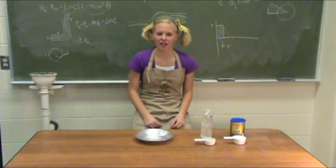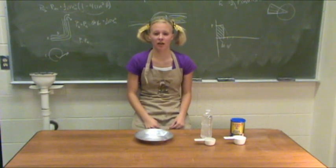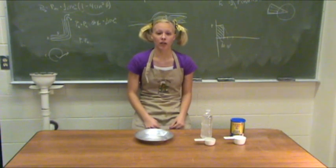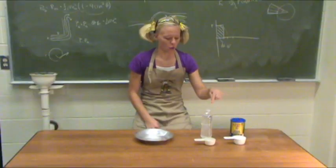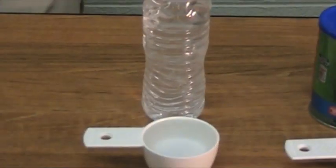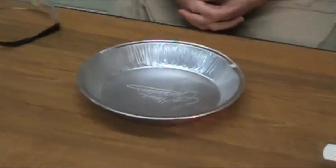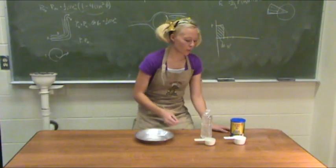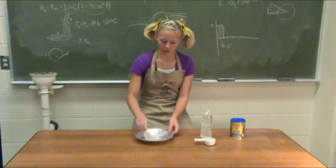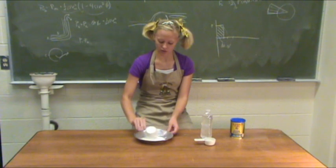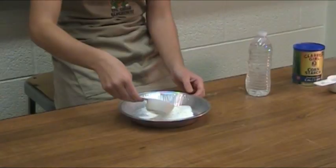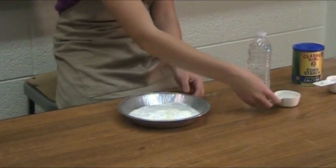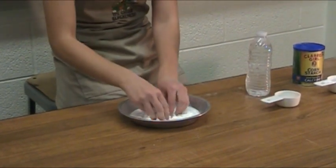Hello, future fluid dynamicists. Today I'm going to teach you how to make your own non-Newtonian fluid at home. What you'll need is 1½ cups cornstarch, ¼ cup water, and something to mix it in — I'm using a pie tin. So, we'll begin by adding our cornstarch and our water.